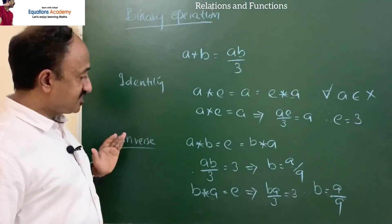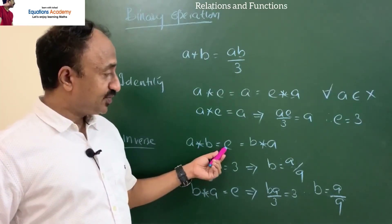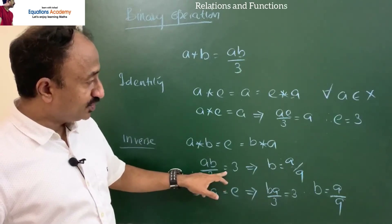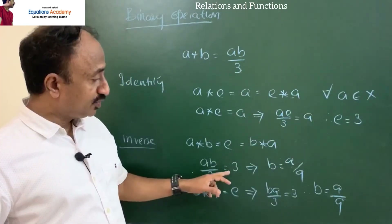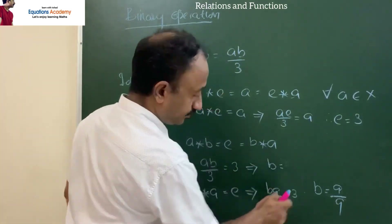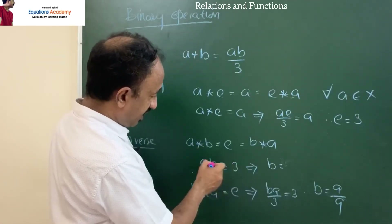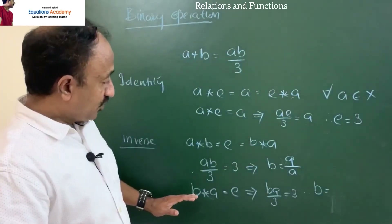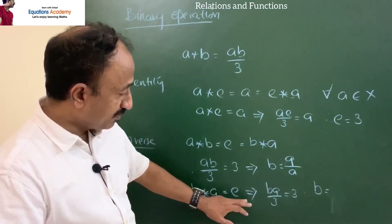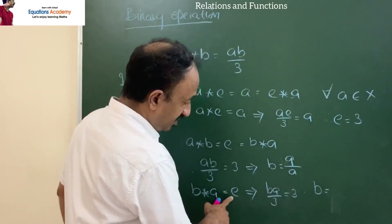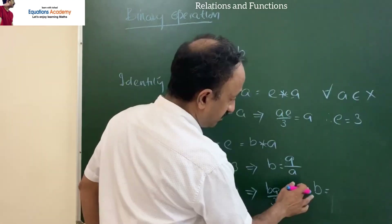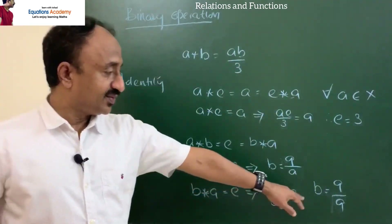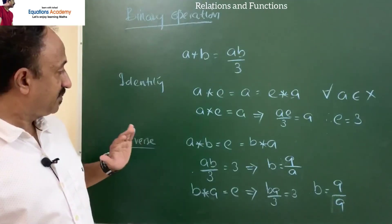Now find the inverse. The condition is a★b = e = 3. So a★b = ab/3 = 3, which gives ab = 9, so b = 9/a. Therefore the inverse of a under this binary operation is 9/a.